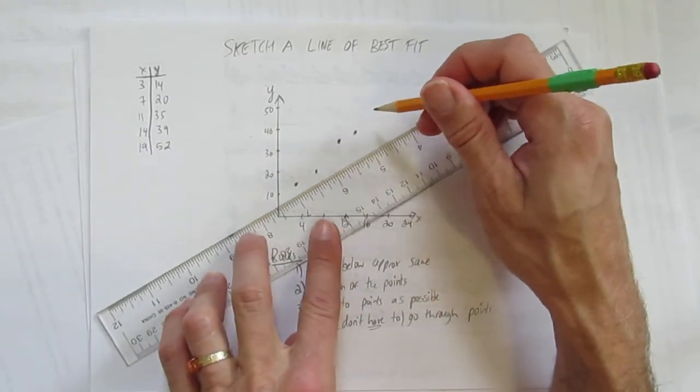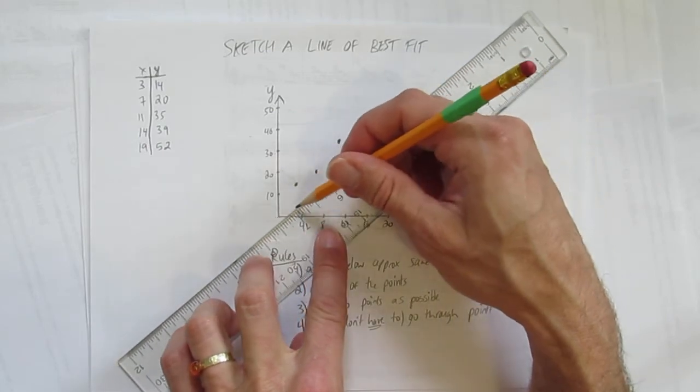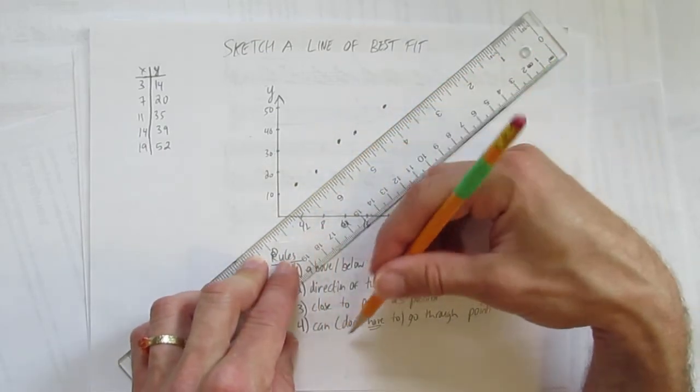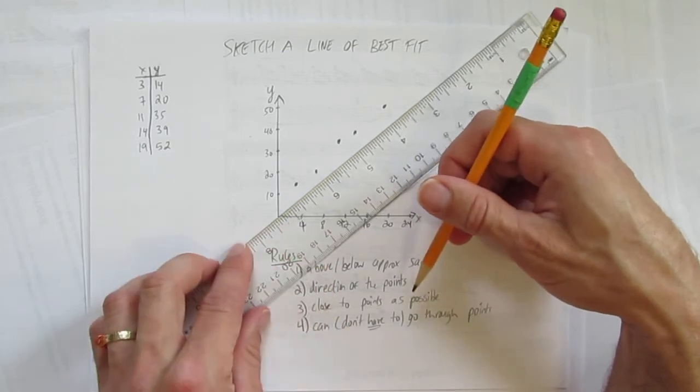Close to the points, so even if you're going the right way, if you're way out here, no good. And lastly, I can, but I don't have to go through points.